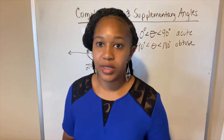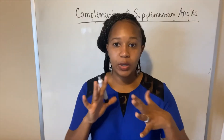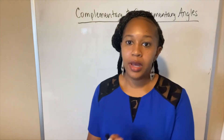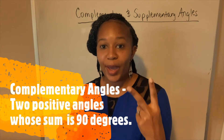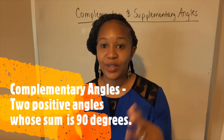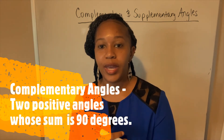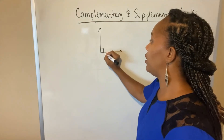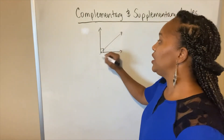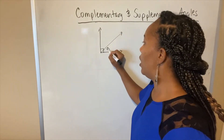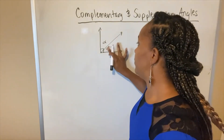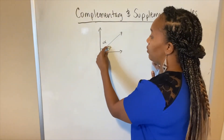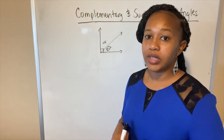Now that we have those basic terms out of the way, we can get to the main topic of this video: complementary and supplementary angles. Let's start with complementary angles. Complementary angles are two angles whose sum is 90 degrees — that means when you add the two angles together, you get 90 degrees. For example, if I create a 90-degree angle and place a ray somewhere inside it, this breaks the 90-degree angle into two separate angles — angle theta and angle alpha. Theta and alpha are complementary angles because together they sum to 90 degrees.